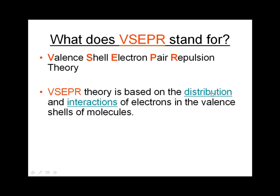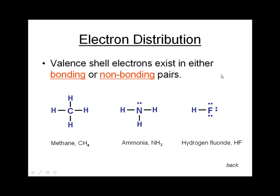Let's take a look first at what I mean by the distribution of electrons in the valence shell. Valence shell electrons in molecules fall within two simple classes: they're either bonding or non-bonding pairs. Look at this first example of methane, CH4 — a carbon atom surrounded by four hydrogen atoms. The carbon atom, like each of the atoms in the second period of the periodic table, reacts until it has a full octet in its valence shell.